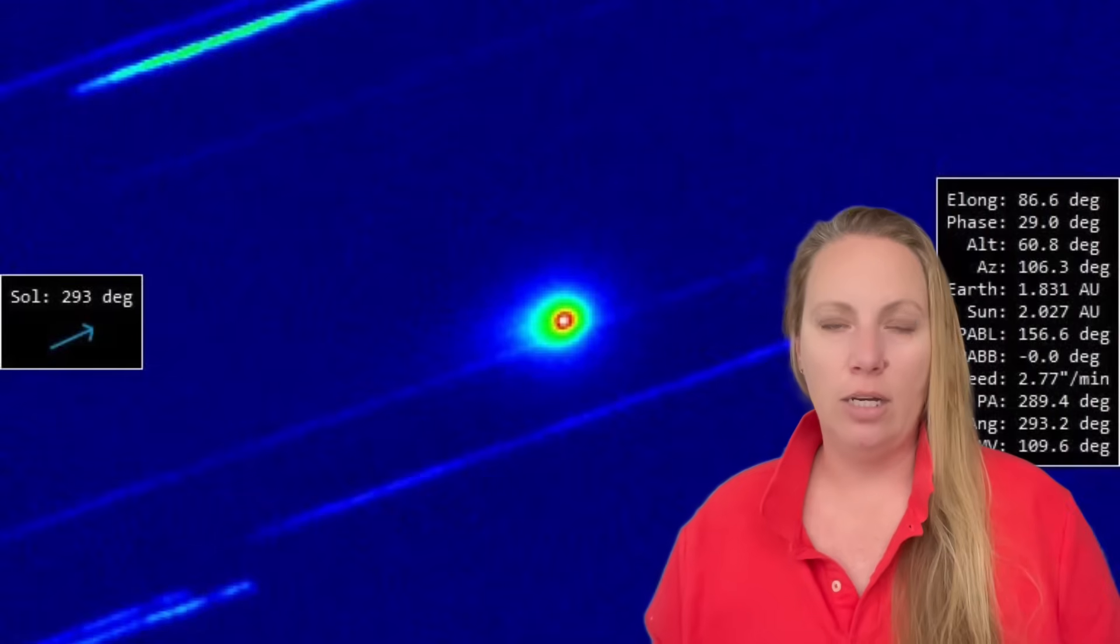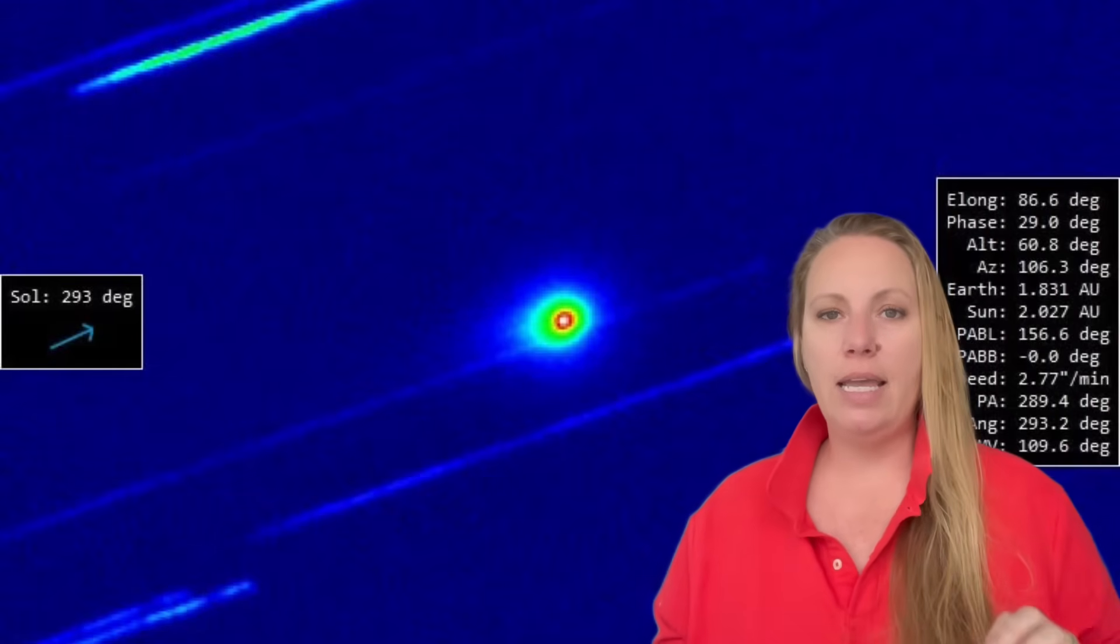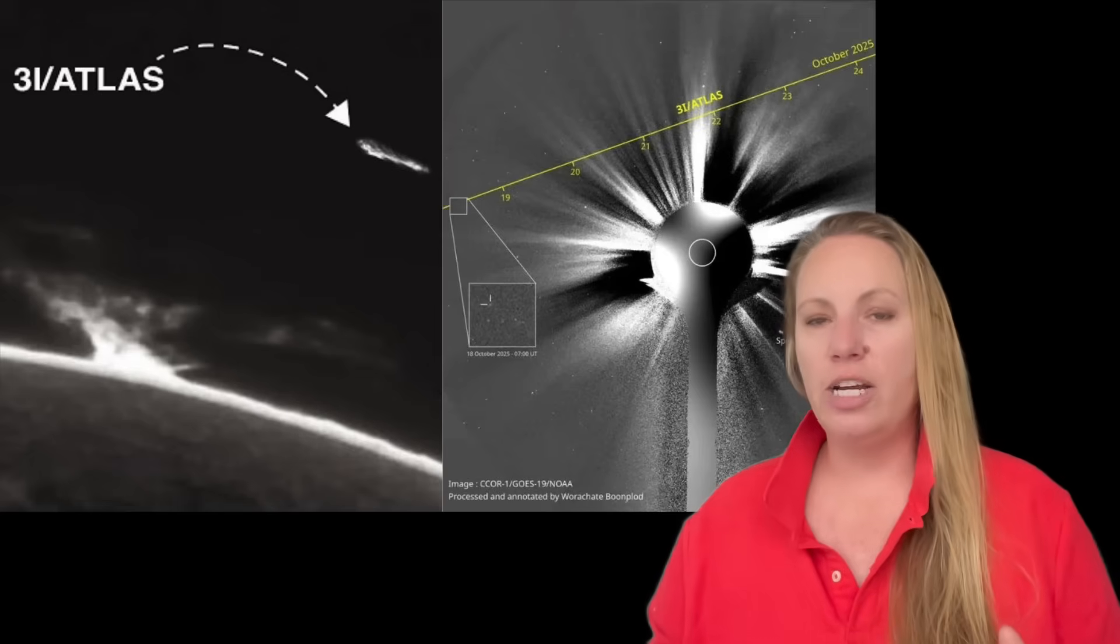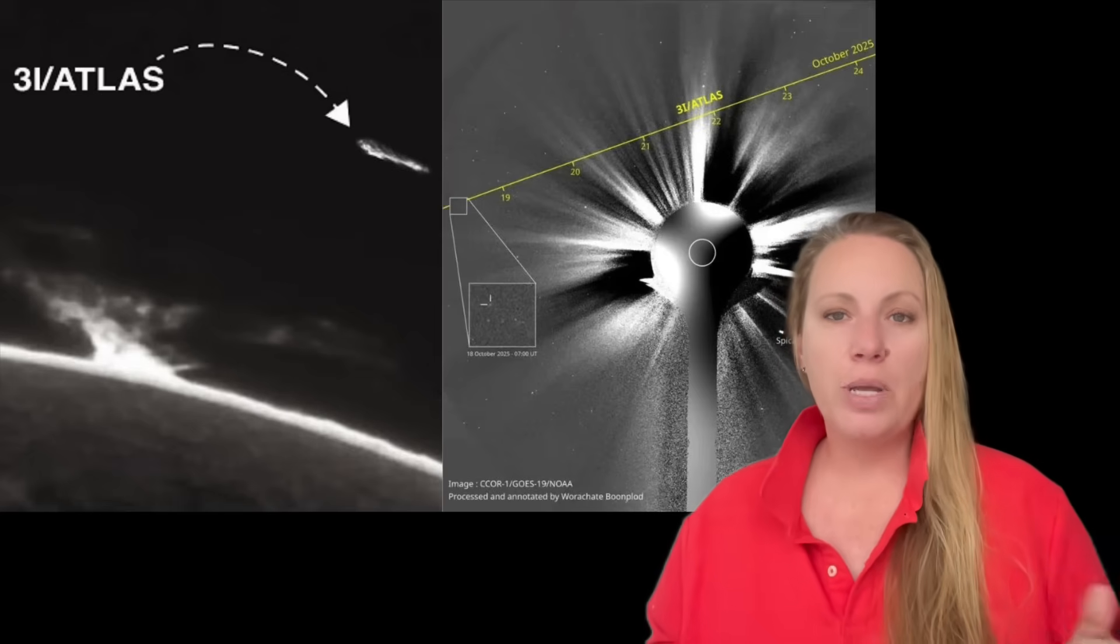When interstellar object 3i Atlas was going into perihelion, it did something different when it came out - the color changed. Perihelion is the moment when an object is closest to the sun.